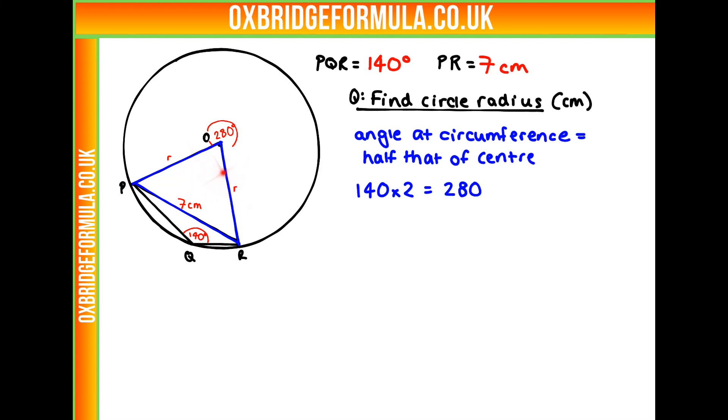From this, we can work out our angle in our triangle there, which I'm going to call X. X must be 360, which is a full circle, take away our angle there, 280. So our angle X is 80 degrees.